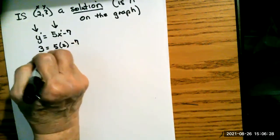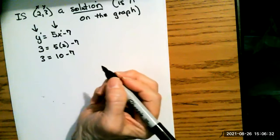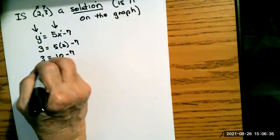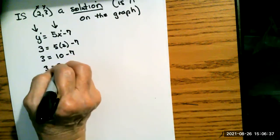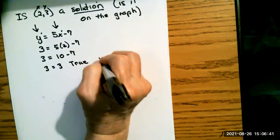So if I put 3 in the y spot and 2 in the x spot, I'm looking to see if the left side and the right side are the same values. On the left side, I see I have 3. On the right side, I have 10, 5 times 2, 10 minus 7, and 10 minus 7 is 3. So that's a true statement.